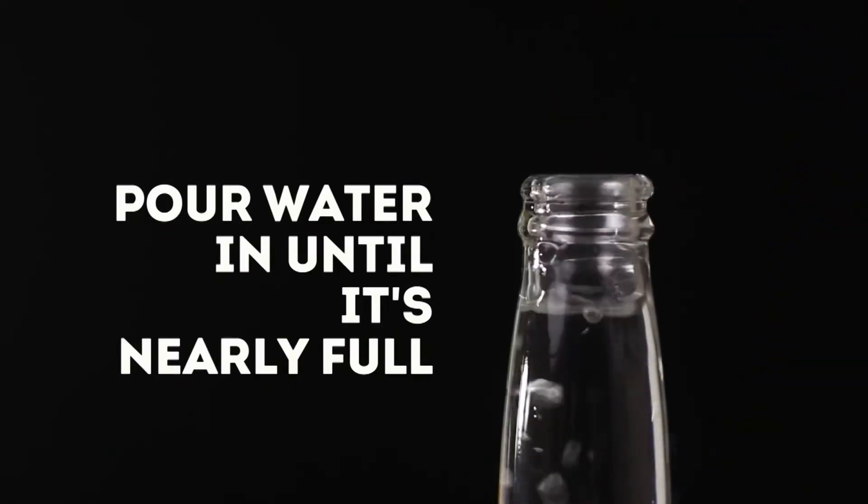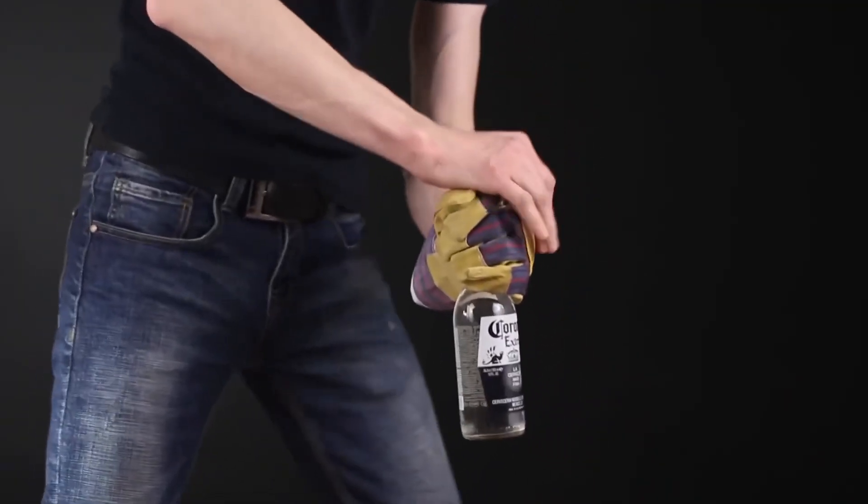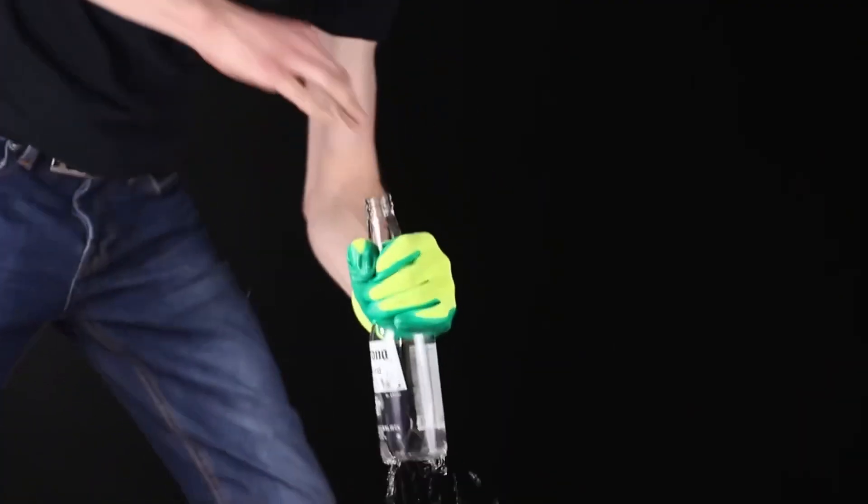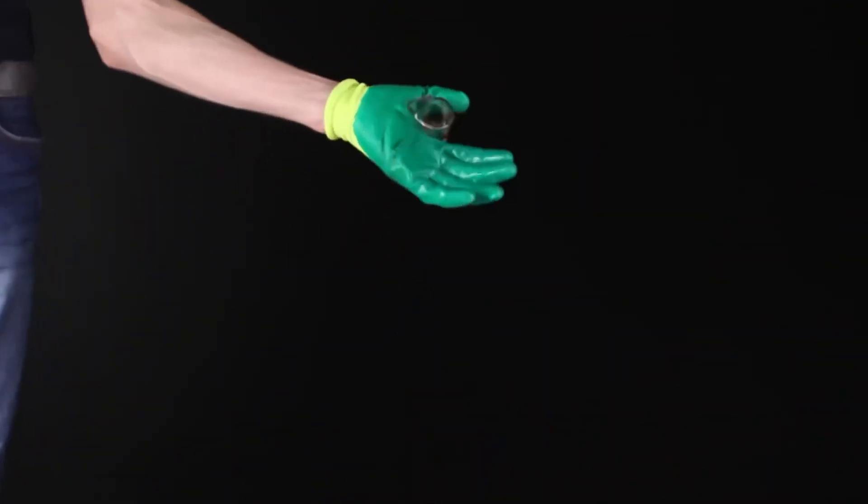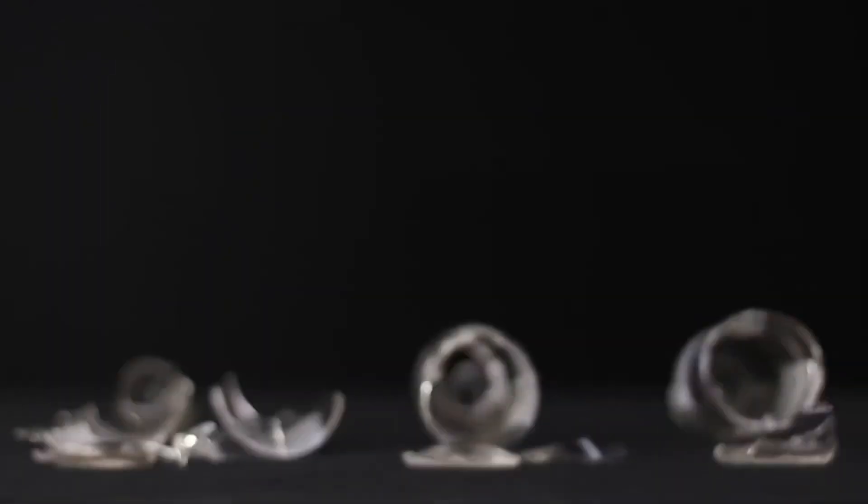Fill the bottle with water almost to the neck and then we deliver a powerful blow with the palm of our hand. Okay, one more. The bottom of the bottle is knocked out, although perhaps not only the bottom. The pressure inside just breaks the bottle. Look what happened to them.